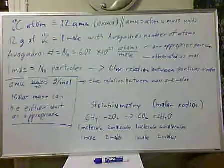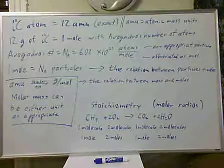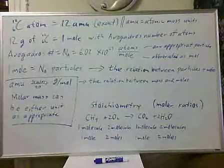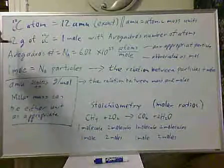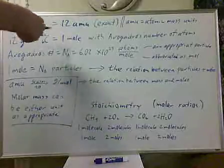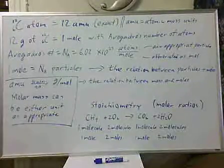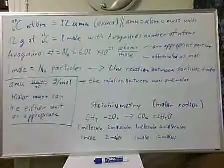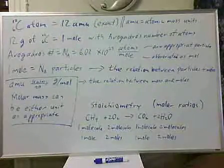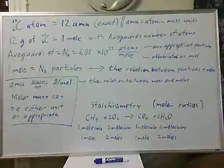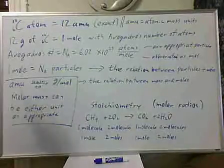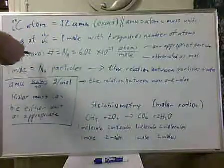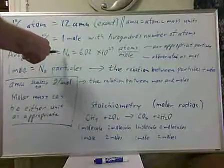We use the same isotope, carbon-12, and said that 12 grams of carbon-12 was one mole, and it contained Avogadro's number of atoms. So we're doing two definitions simultaneously. It took us a while to figure out how many atoms was in 12 grams of carbon-12.